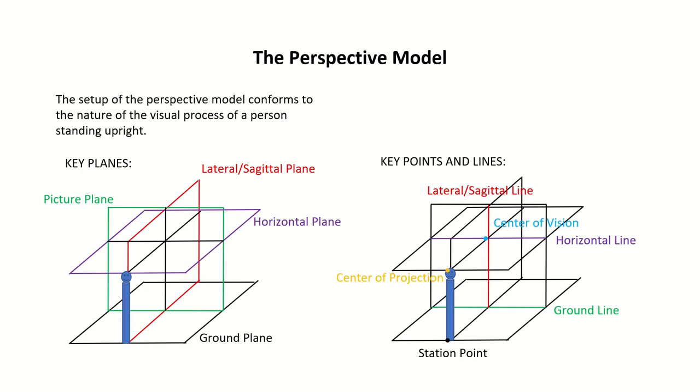From the point of view of the observer, these major planes create key lines and points: the lateral line, the horizontal line, the ground line, and the center of vision, which is where the lateral and horizontal lines intersect.